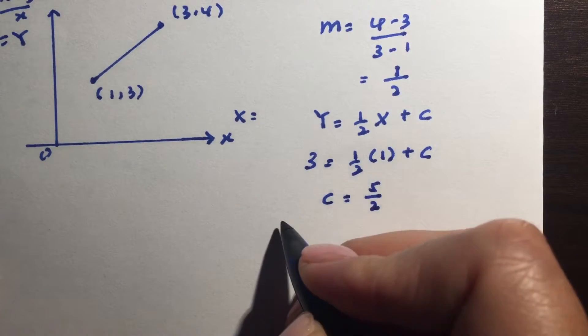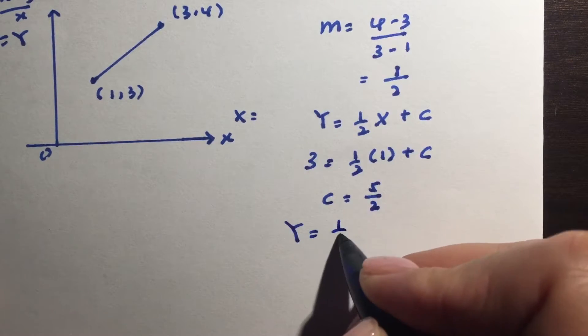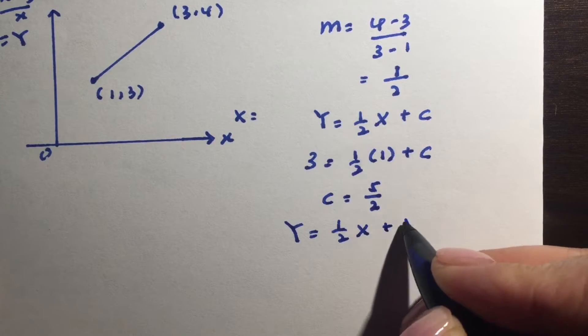So putting it all back together I will have big Y equals half big X plus 5 over 2.